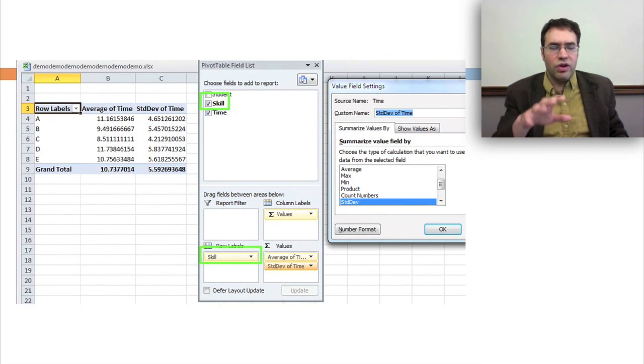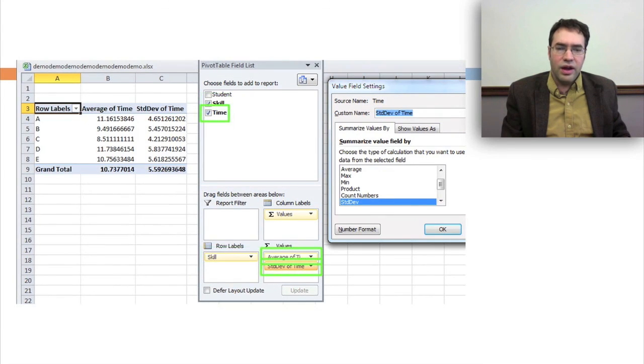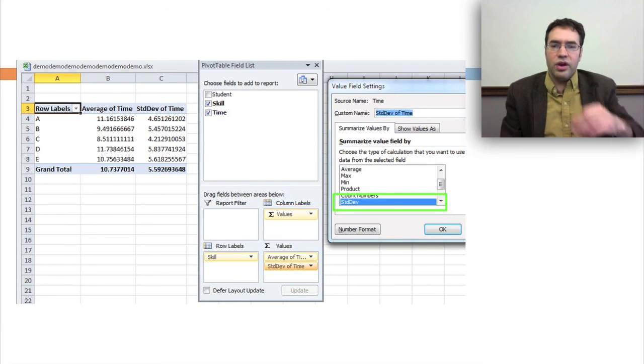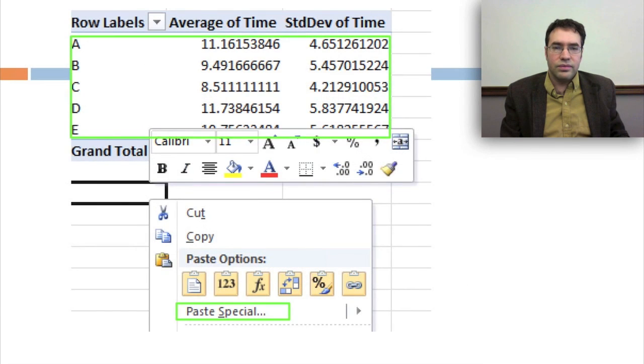Then we create a pivot table. So in this case, we're going to put as row labels the skill, and as values the time. And you'll note that we're going to do both the average and the standard deviation of time. And you can see when we right click on values, we get this value field settings option.